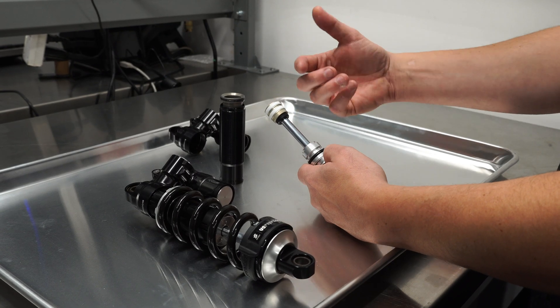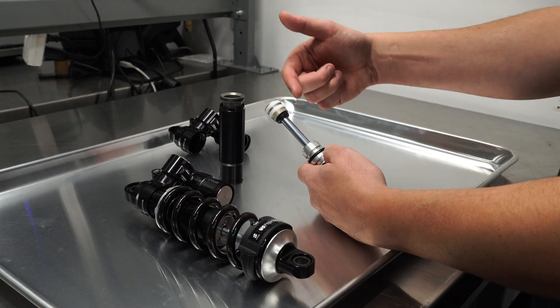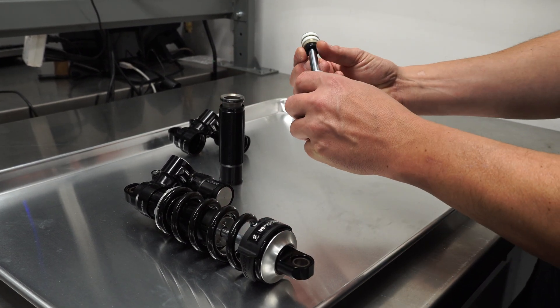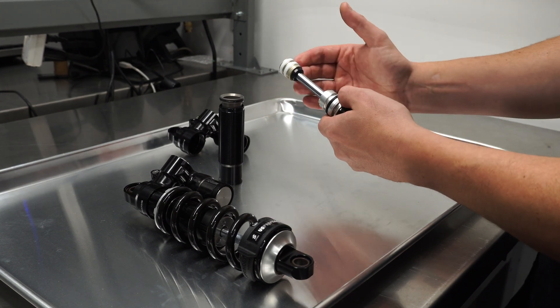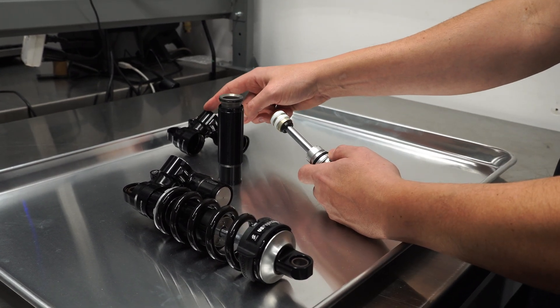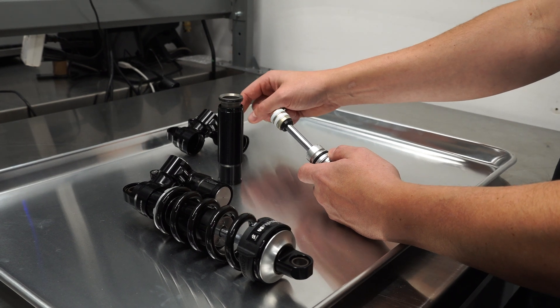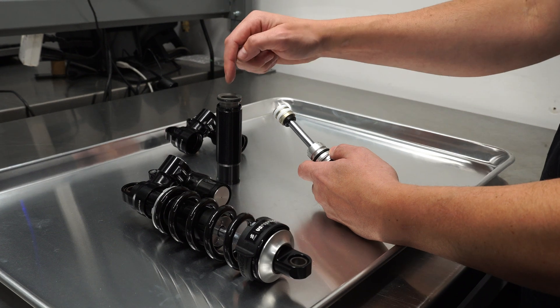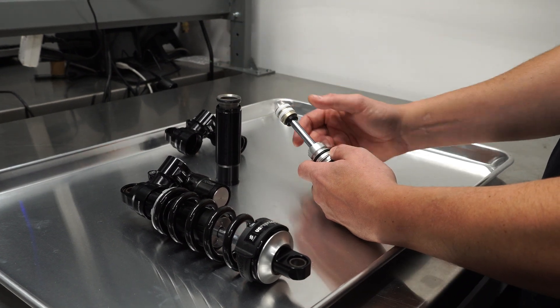During the rebound stroke, much the same thing happens in the reverse direction, but the oil flow through the rebound piston is the primary restriction this time, generating pressure on the back side of the main piston, which slows down the rate of extension. As oil reaches the low pressure side of the rebound damping piston in the reservoir bridge, the reservoir pressure again pushes it back through the check valve on the compression piston, which lets it flow back into the top of the inner tube with minimal restriction.